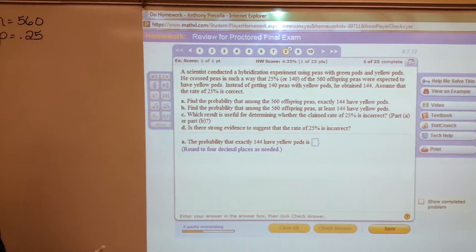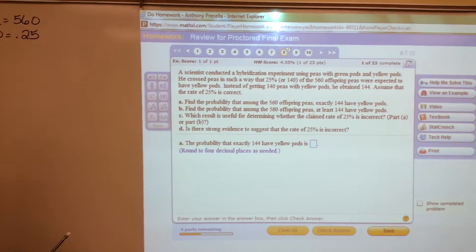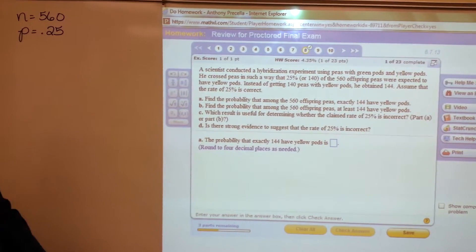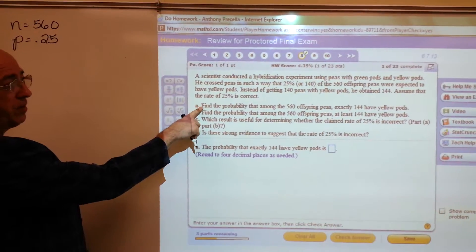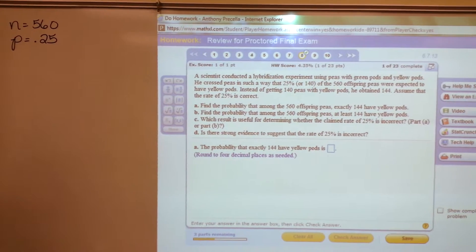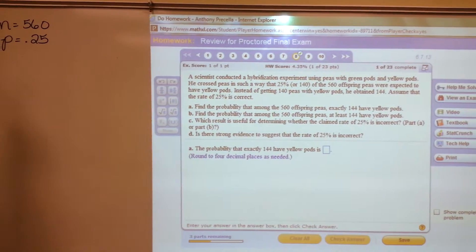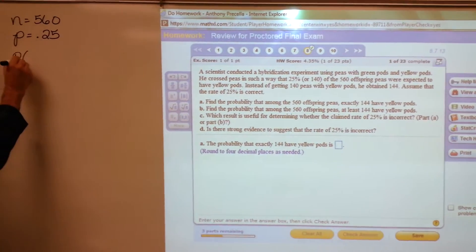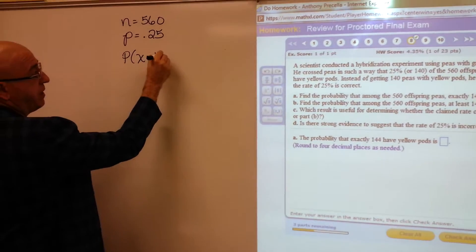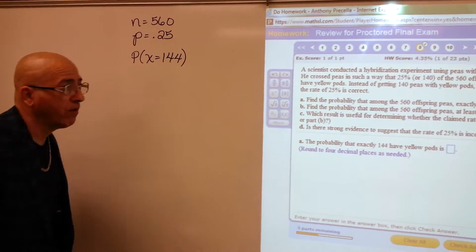Instead of getting 140 peas, he obtained 144. So let's find the probability that among the 560 offspring peas, exactly 144 have yellow. So we want to know the probability that X is 144.